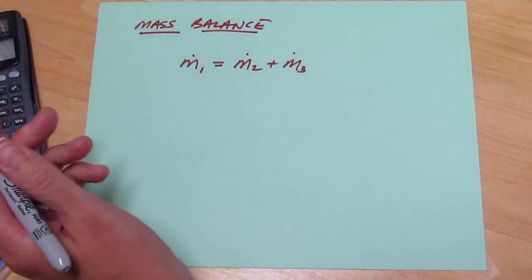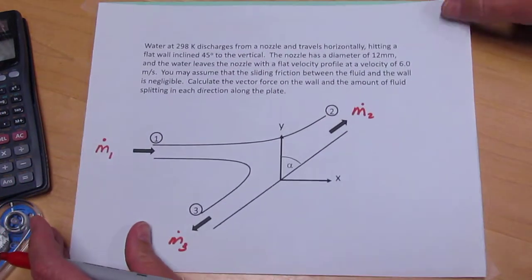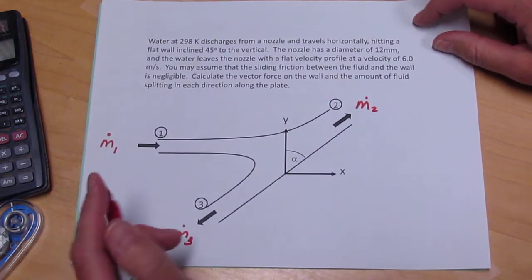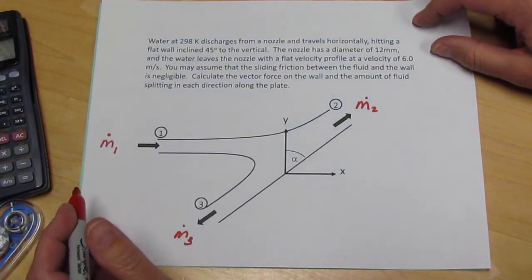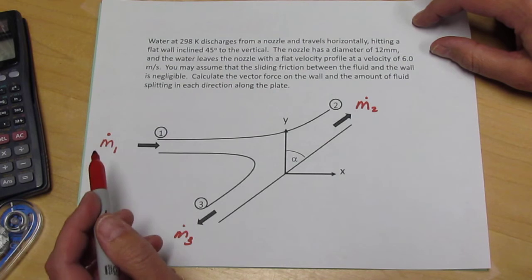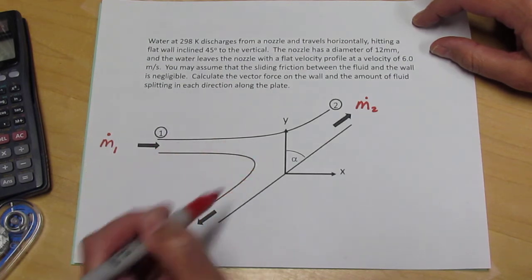The next, perhaps, more complex fluid that we could apply to this would be the mechanical energy balance. Now actually, the mechanical energy balance is limited to single input, single output systems, and this system has one input and two outs.